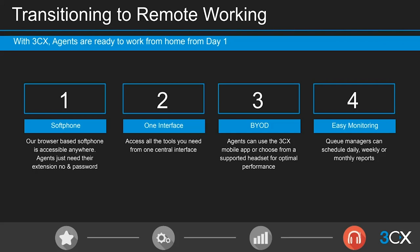For call center agents working remotely, we recommend using a supported Sennheiser headset with their web client for optimum home working — Sennheiser is currently the only headset manufacturer fully qualified by 3CX. Queue managers can also use the 3CX mobile app; the recent iOS beta now supports video calling, which is exciting. Wallboard reports can be generated daily, weekly, or even hourly and delivered to your email so you can constantly monitor agents throughout the day.